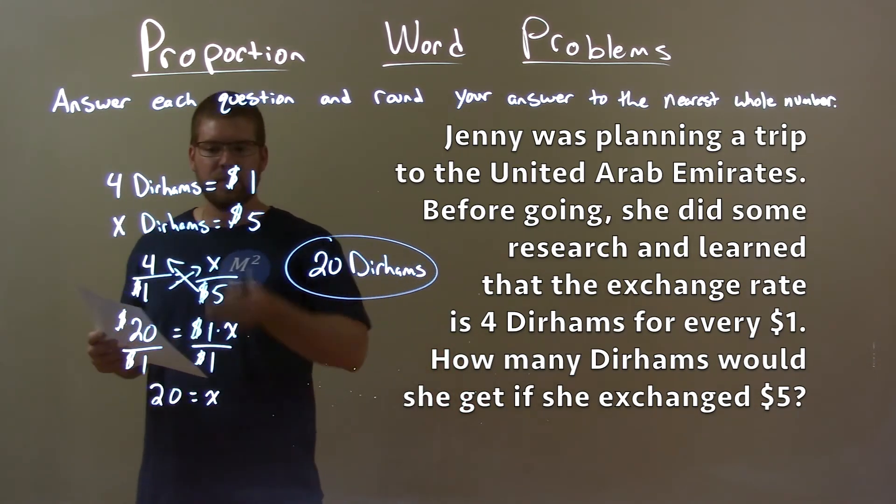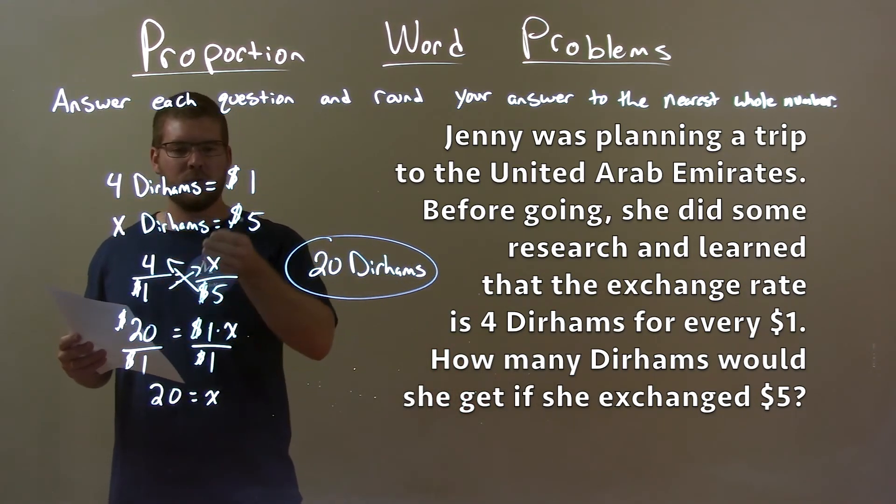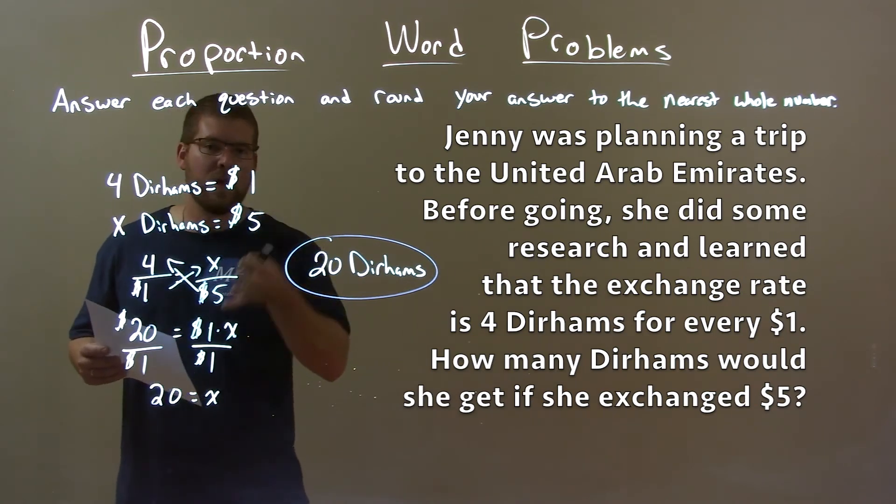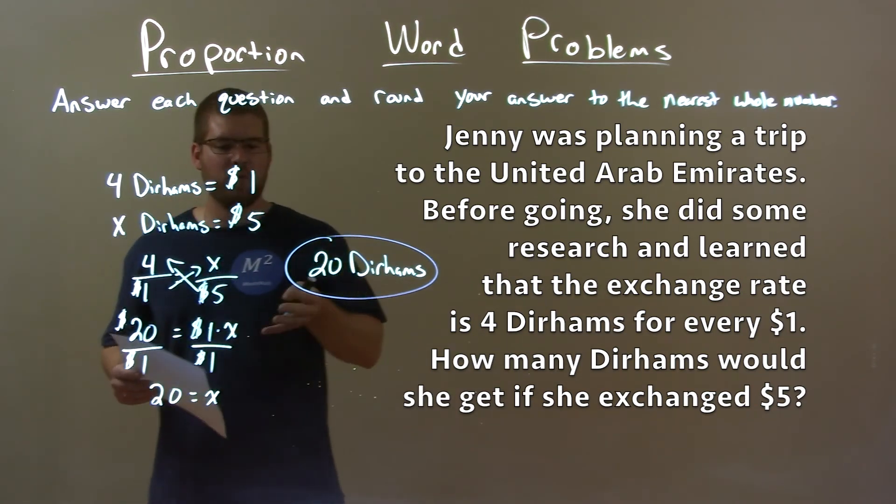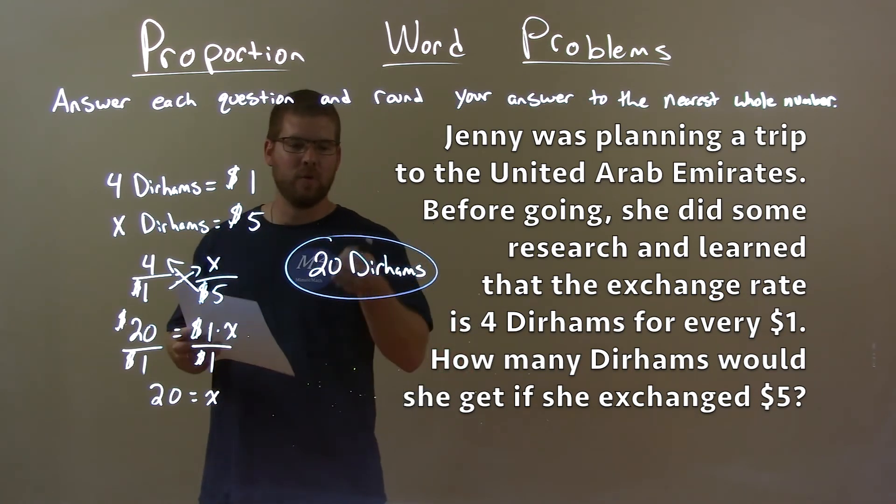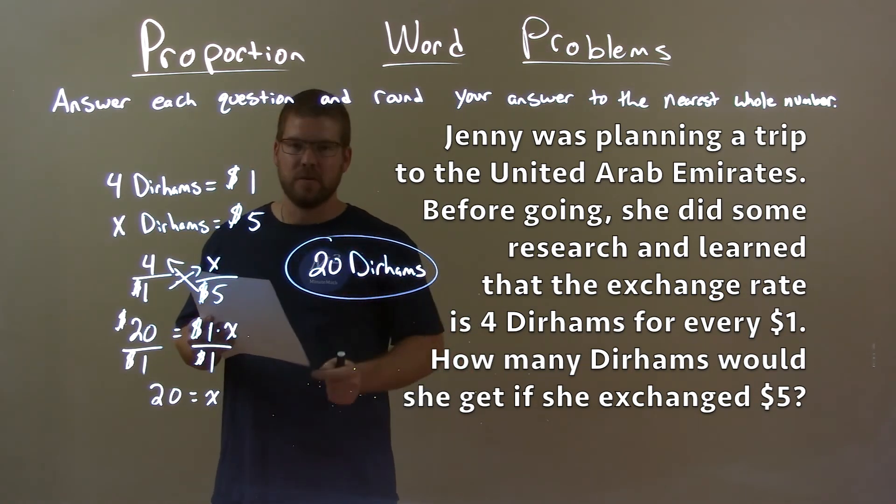we set up a proportion here. 4 dirhams to $1 equals x dirhams to $5. And then we solve for x. That gave us our final answer. When we exchange $5, we will receive, or Jenny will, 20 dirhams.